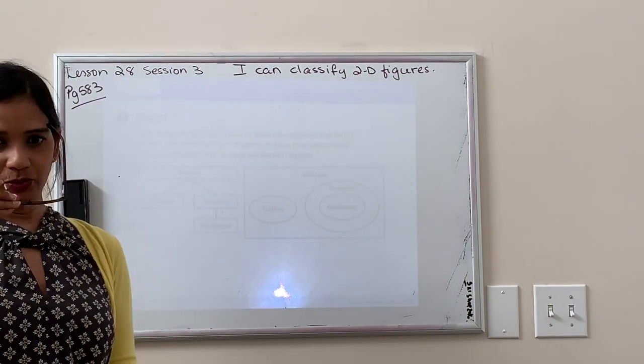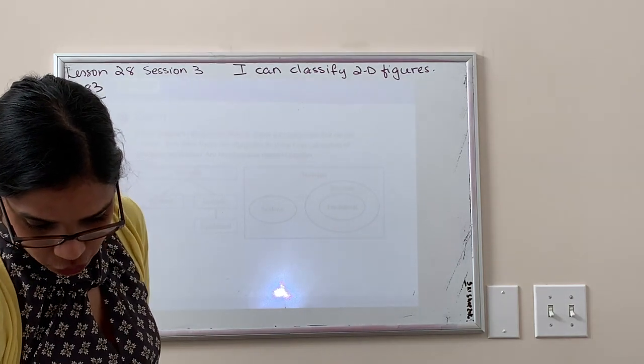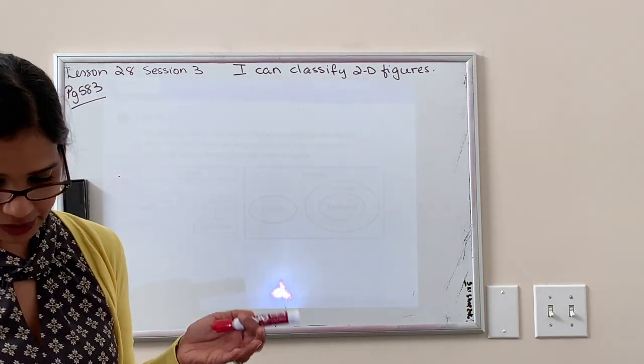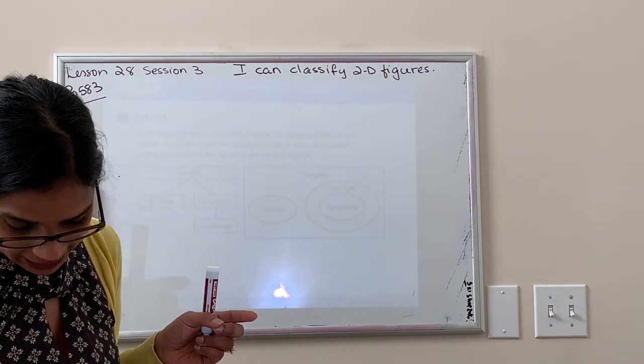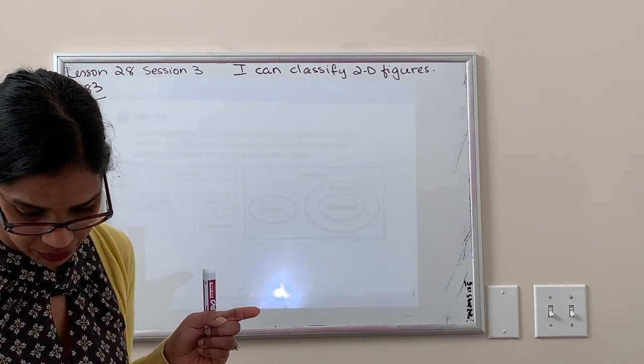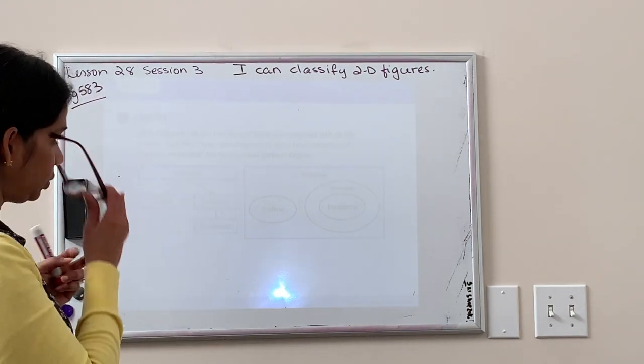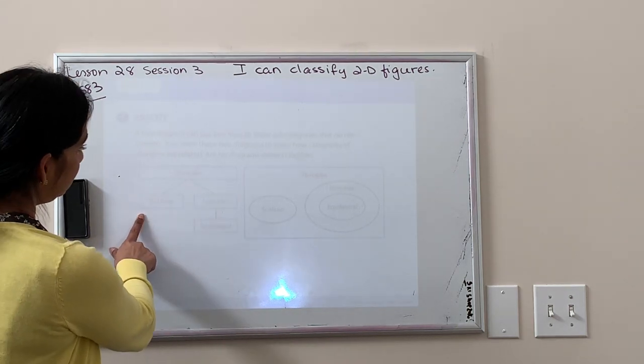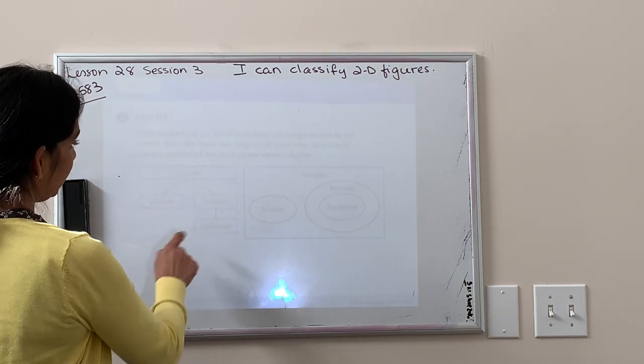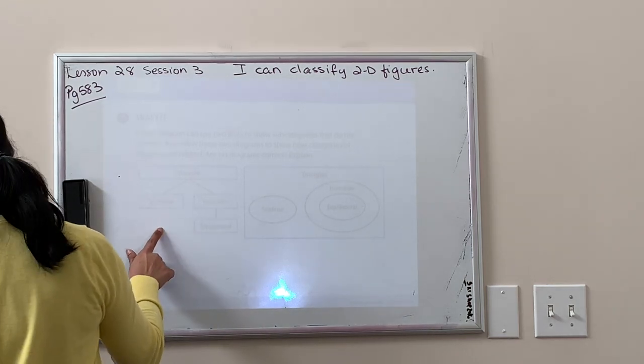Let's look at this one. Number two: A tree diagram can use two lines to show subcategories that do not overlap. Jose drew these two diagrams to show how subcategories of triangles are related. Are his diagrams correct? Explain. So he has a triangle here and then he has scalene, isosceles and equilateral. Now, is this correct or not?